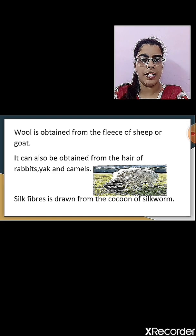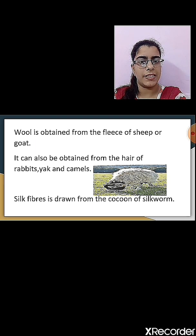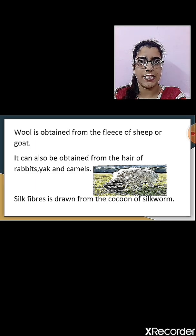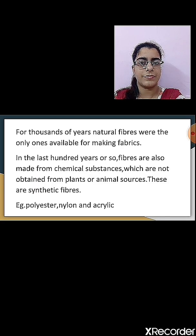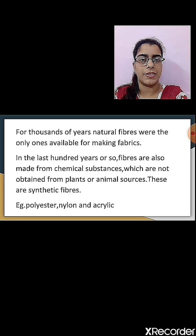From where do we get wool? Wool is obtained from the fleece of sheep or goat. It can also be obtained from the hair of rabbit, yak, and camel. Silk we get from the silkworm — silk fiber is drawn from the cocoon of the silkworm. These were the natural fibers, as we get them from either plants or animals. But some fibers are man-made, so they are known as synthetic fibers.